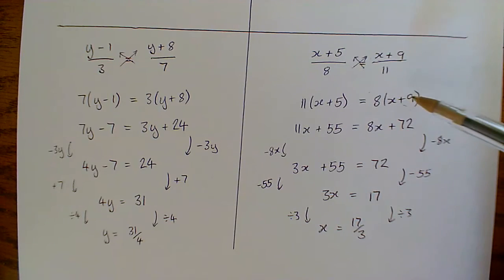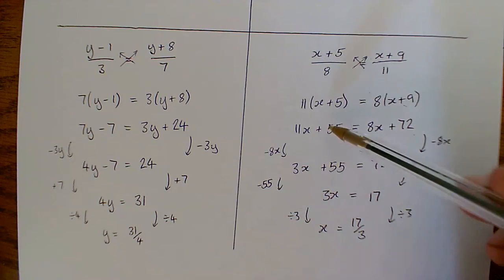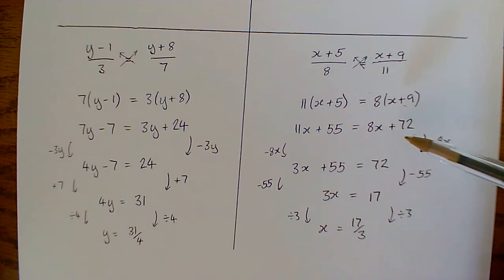But keep in mind the basic idea is to cross multiply. That gives us something which we then can deal with. Because it's like the bracket stuff we did. Expanding the brackets gives us an equation which looks like the unknown on both sides equations that we know how to do. And then we solve from there.